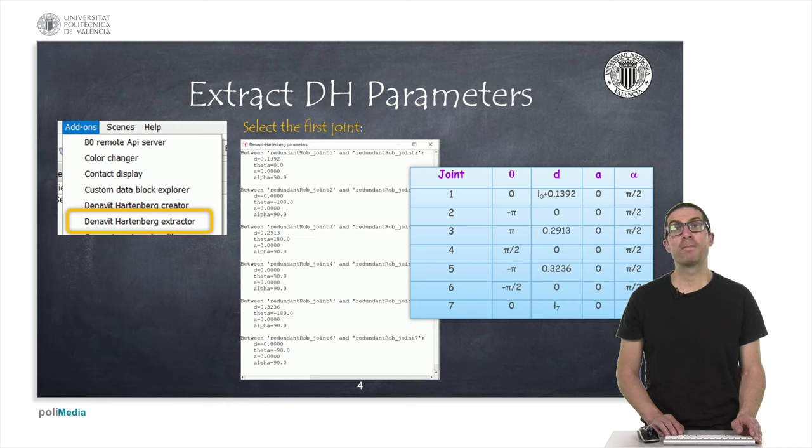This is what I show here in this table, in which I have included all the Denavit-Hartenberg parameters that are related with this robot. In particular, parameter L0 and L7 correspond to the height of the first joint and the separation distance of the last joint with respect to the tip.